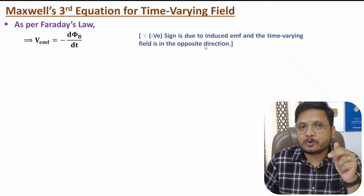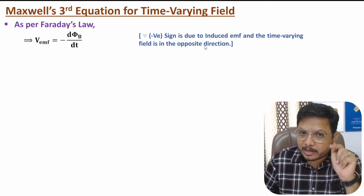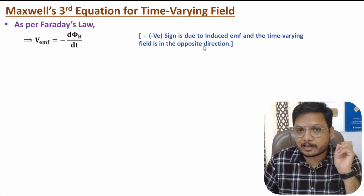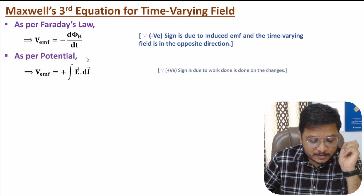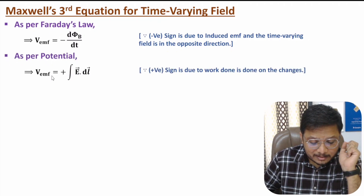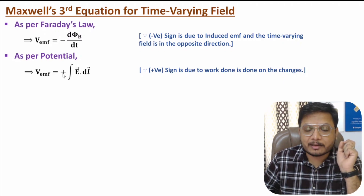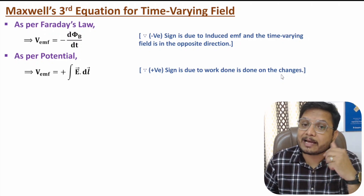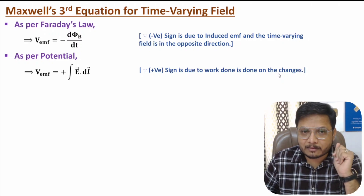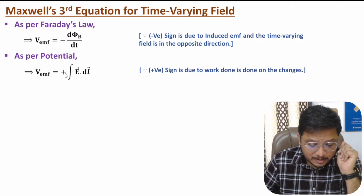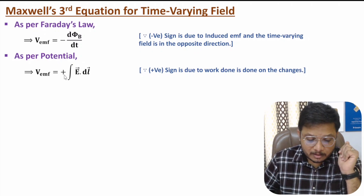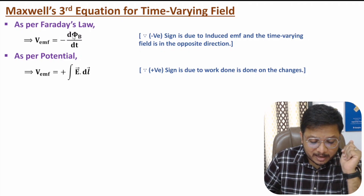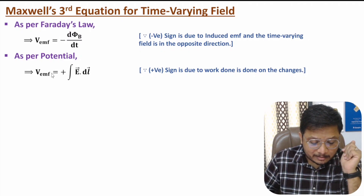The basic definition of potential is the negative of the line integration of electric field. Here we have a positive sign because the work done is done on the charge. So induced EMF equals negative of rate of change of magnetic flux with respect to time, and that potential can be calculated by line integration of electric field.